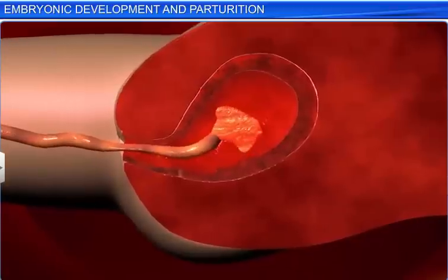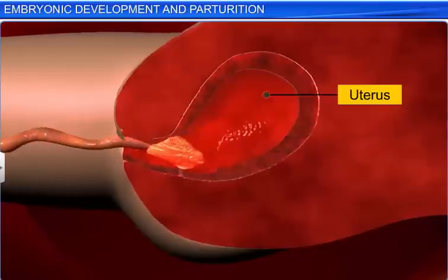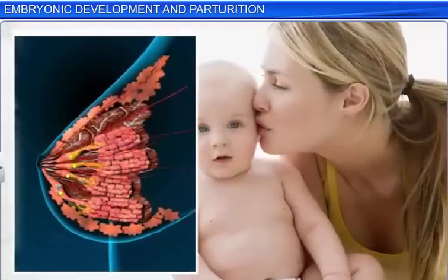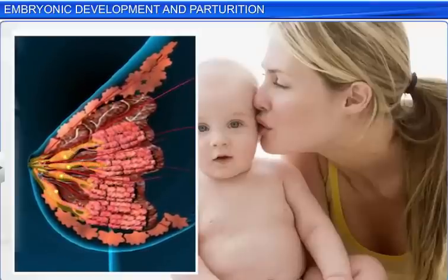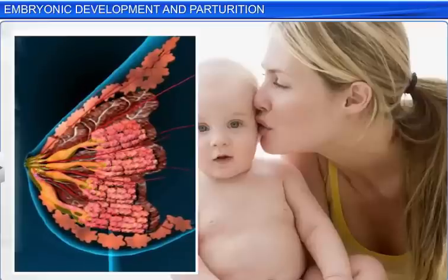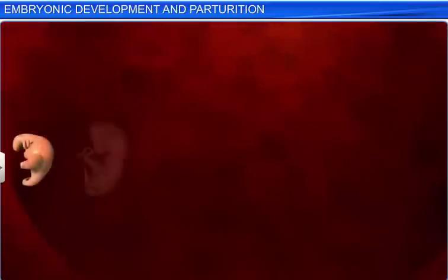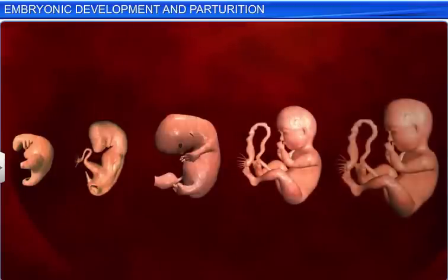Immediately after the birth of the baby, the placenta is expelled from the uterus. Soon after birth, the baby needs to be breastfed by the mother as early as possible, because immediately after parturition, the mammary glands start secreting colostrum — a form of milk that is rich in antibodies and improves the immune system of the baby. Every baby thus begins its journey as a zygote, which develops into a fetus over nine months.